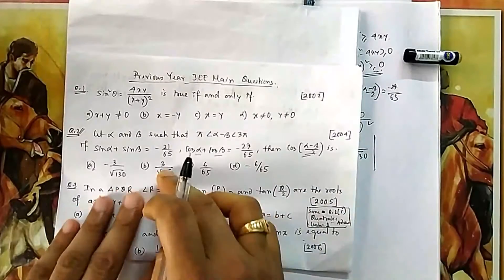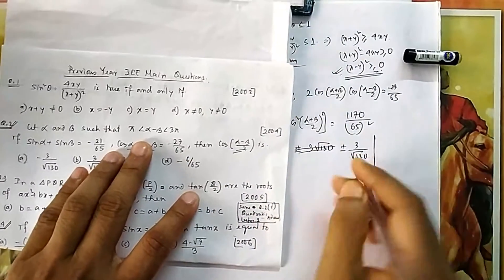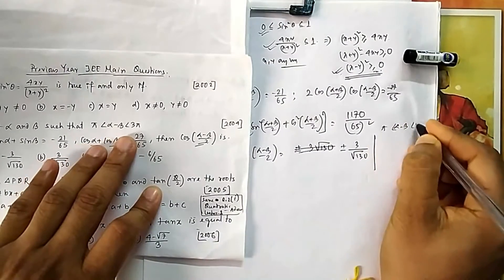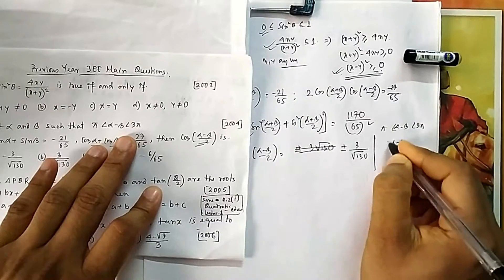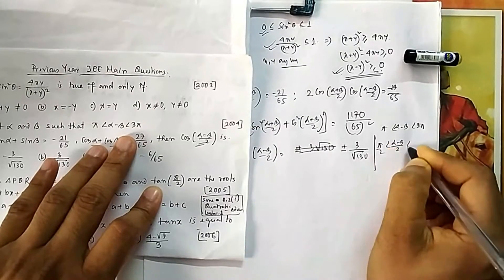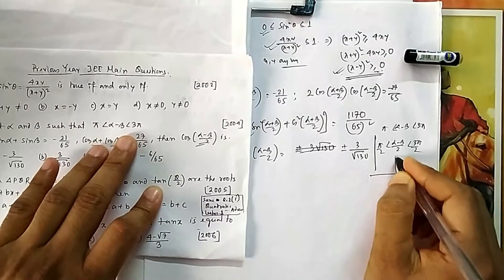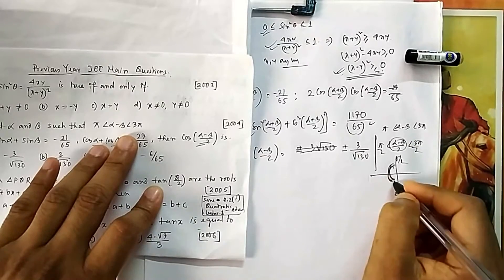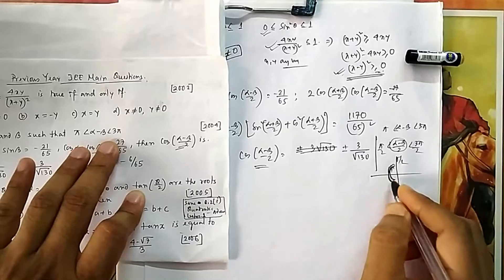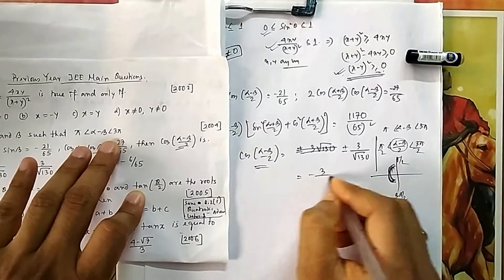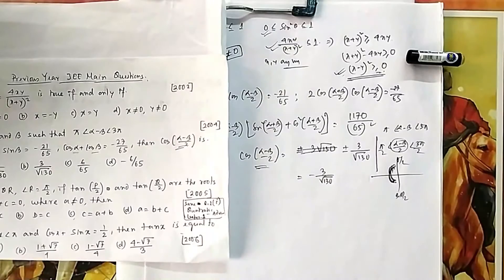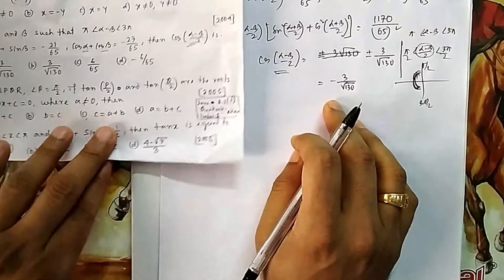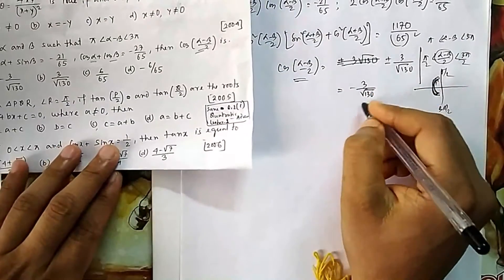To choose the correct sign, we use the given range. Since α-β lies between π and 3π, dividing by 2 gives (α-β)/2 between π/2 and 3π/2. This angle lies in the second and third quadrants, where cosine is always negative. So cos((α-β)/2) = -3/√130, which is option A.